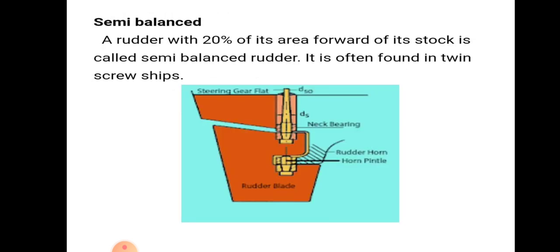Semi-balanced rudder: a rudder with 20% of its area forward of its stock is called a semi-balanced rudder. It is often found in twin-screw ships.